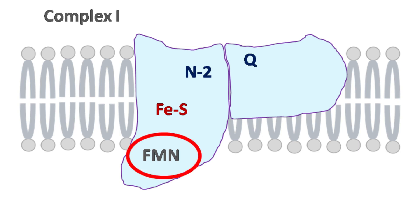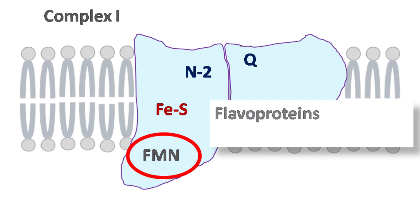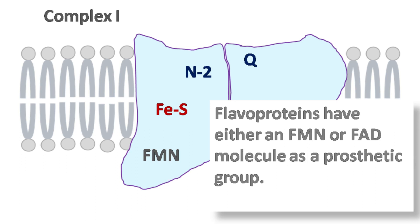FMN is a part of flavoproteins. Flavoproteins are proteins that have either FMN or FAD as a prosthetic group. Most flavoproteins play an important role in carrying out redox reactions.